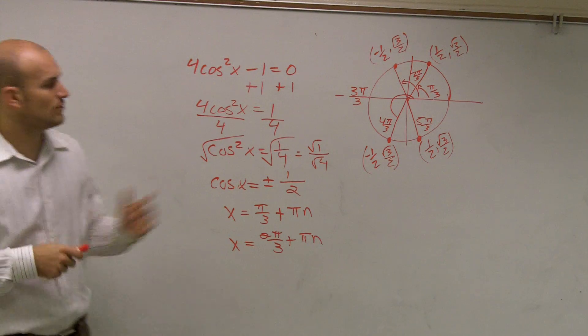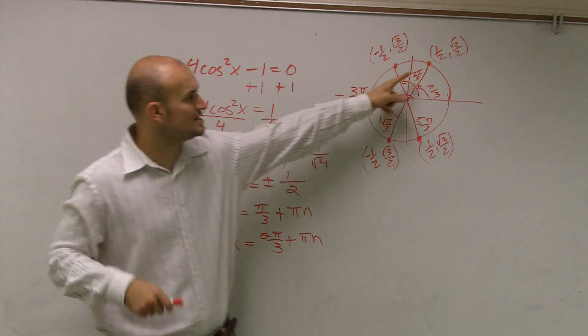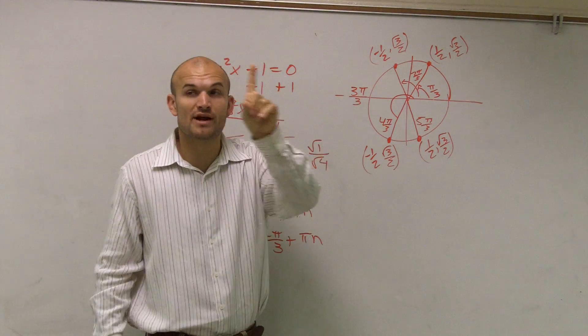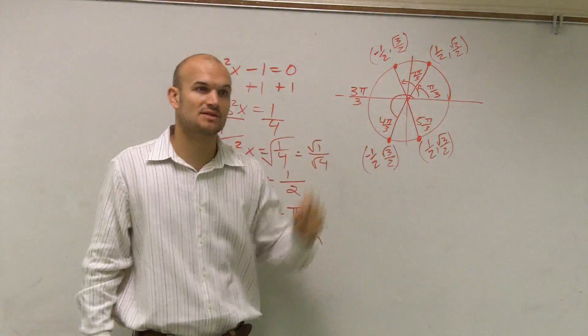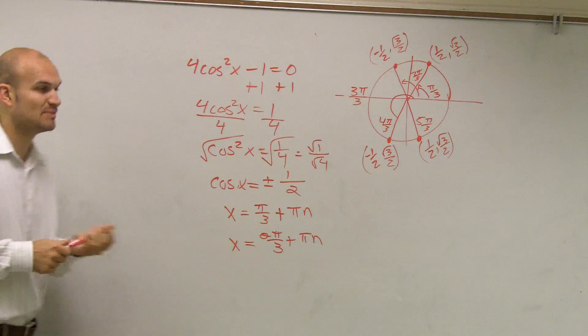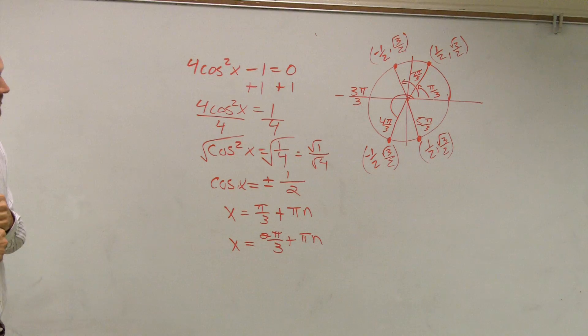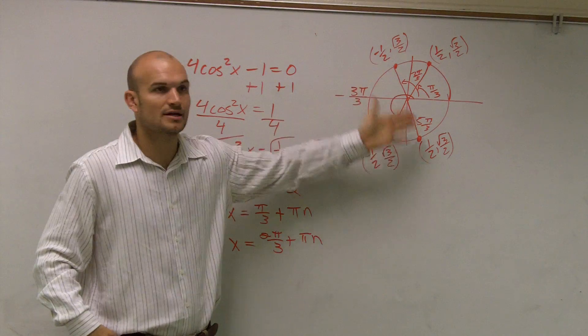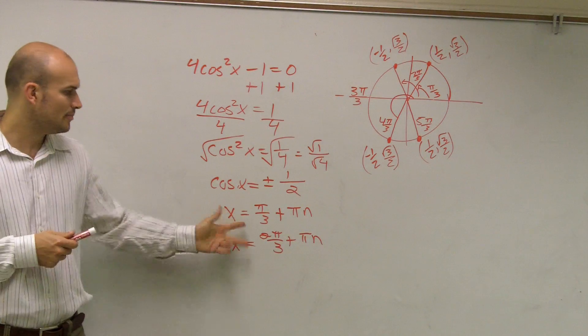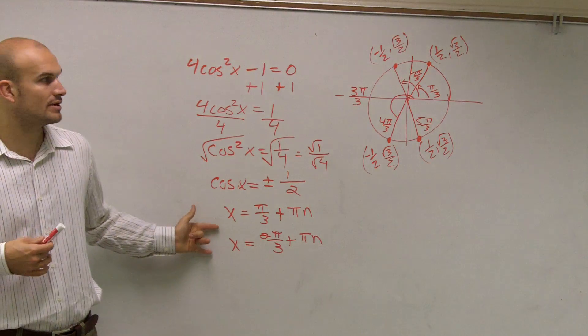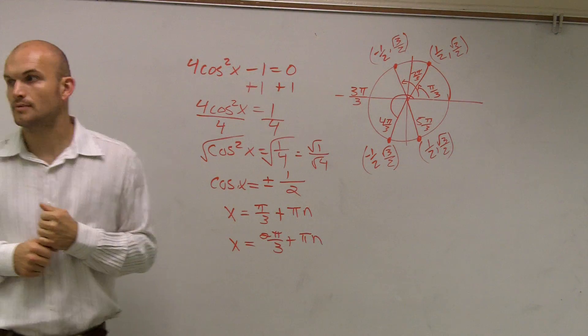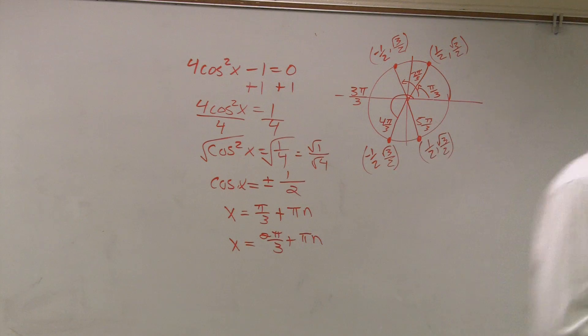So then you might be able to write one answer and just write it as plus π. Or you might have two answers, plus π. It's going to depend on what you see when you look at your answers. Just look at the distance between them and see if you can write it like that. But that is how you would write your answer. So that is your answer to that equation.